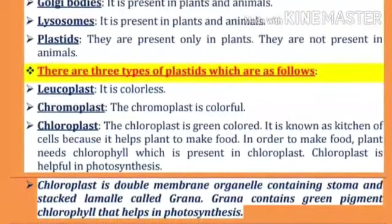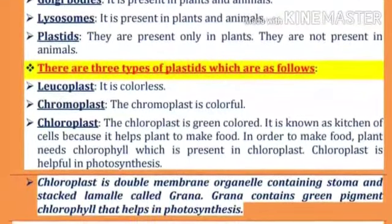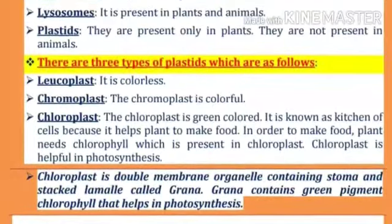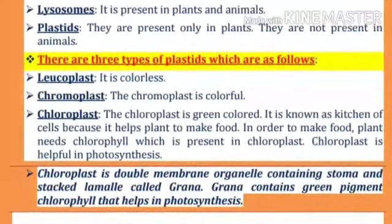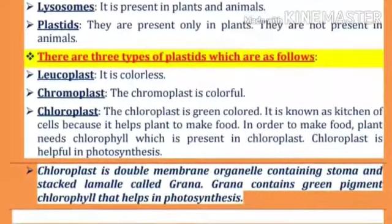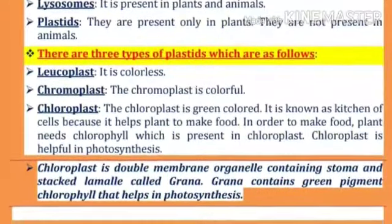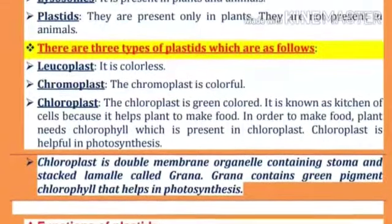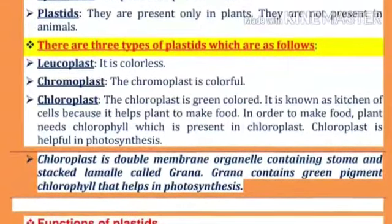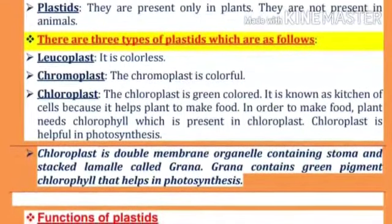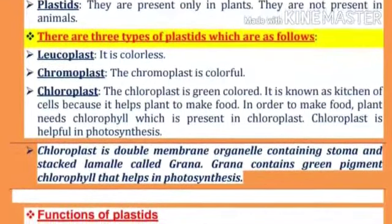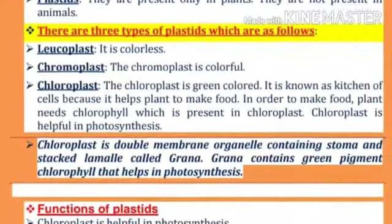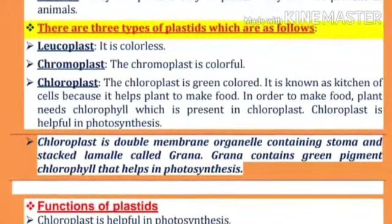Chloroplast is helpful in photosynthesis. It is a double membrane organelle containing stroma and a stacked lamella called grana. Grana contains the green pigment chlorophyll that helps in photosynthesis.